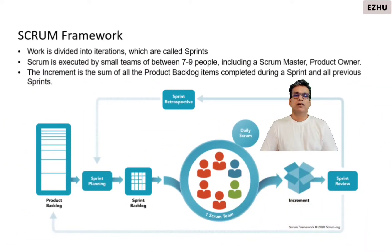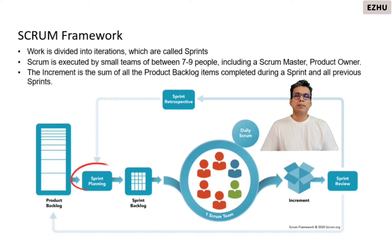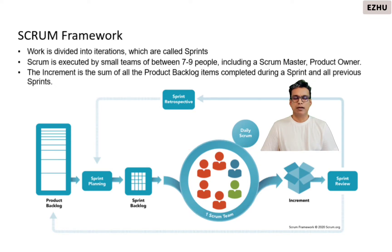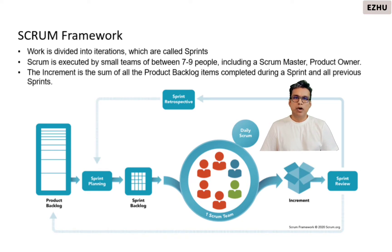In the Scrum framework, the overall product is broken down into features called stories, user stories, or epics by the product owner. These stories are then prioritized for each sprint or release cycle. A typical team consists of seven to nine members including a Scrum Master and a product owner. The intent of this framework is to ensure that at the end of each sprint, there is a demo given to the product owner who confirms the product meets the intended objectives.